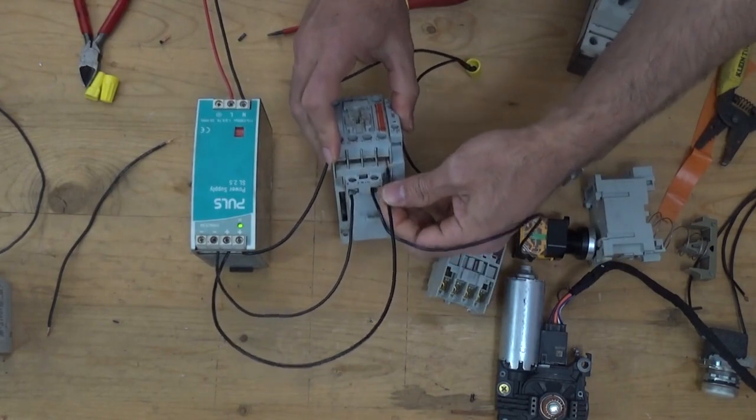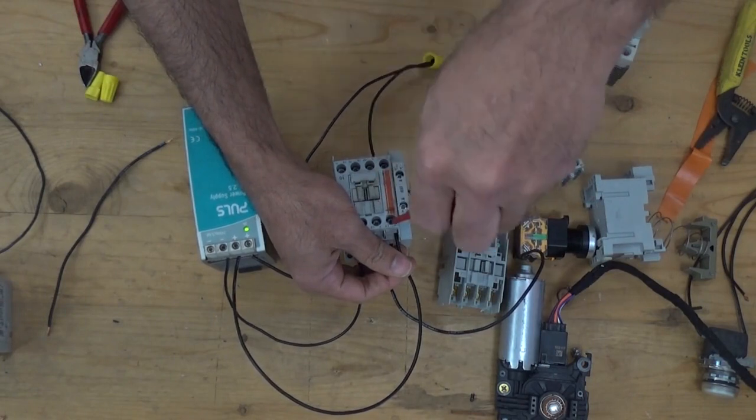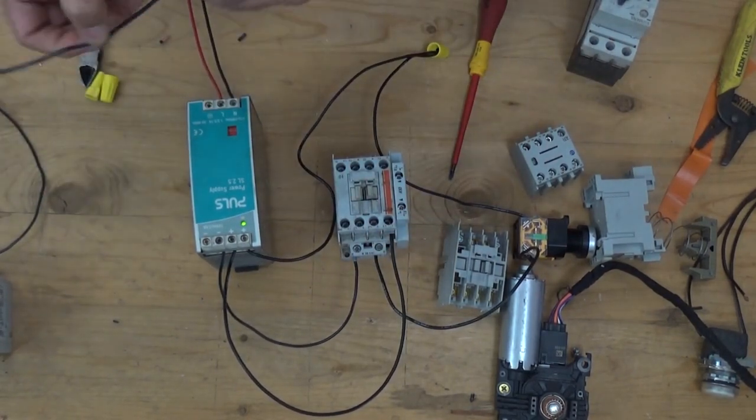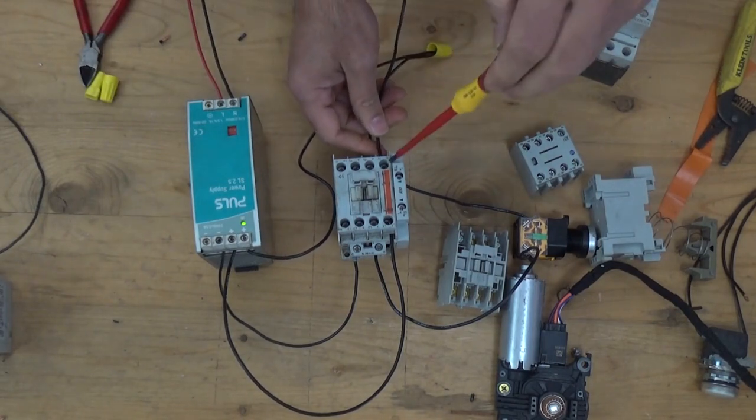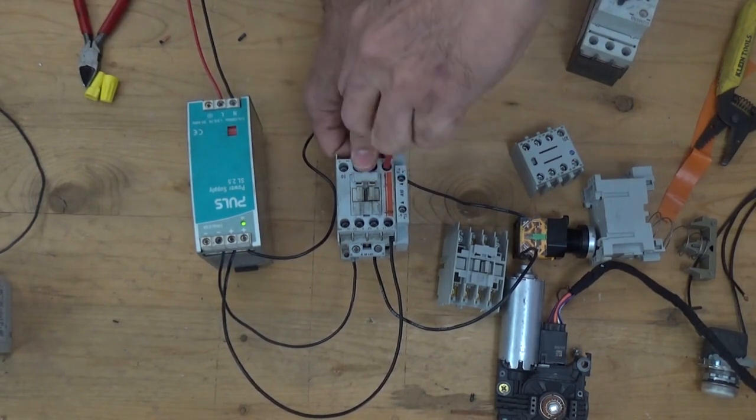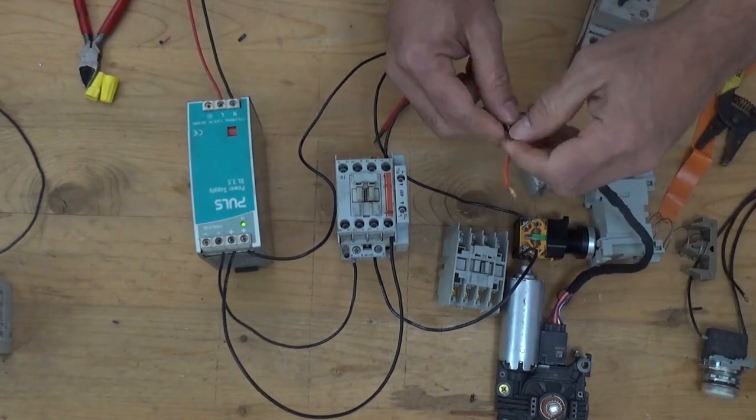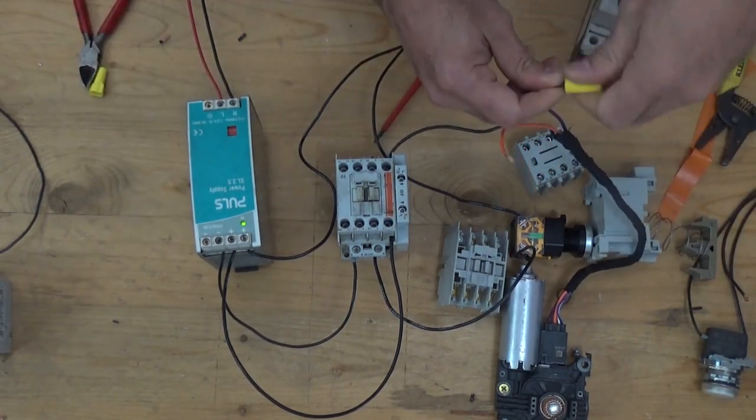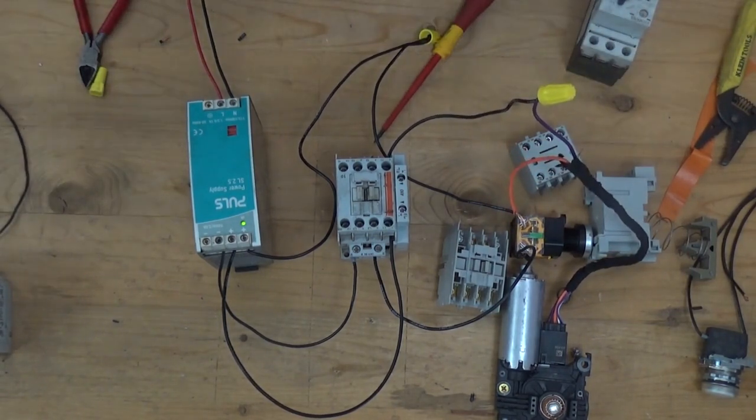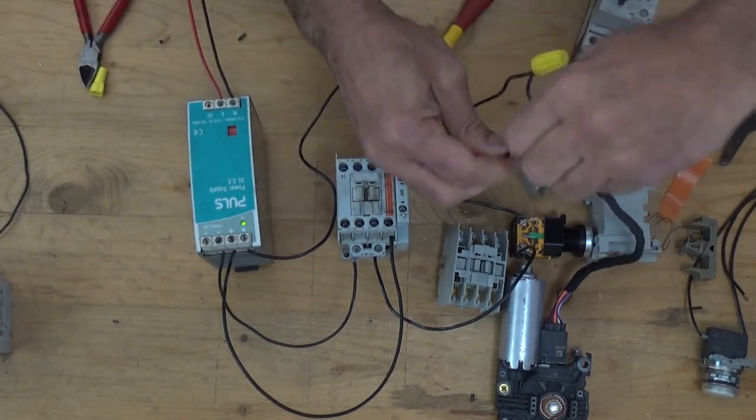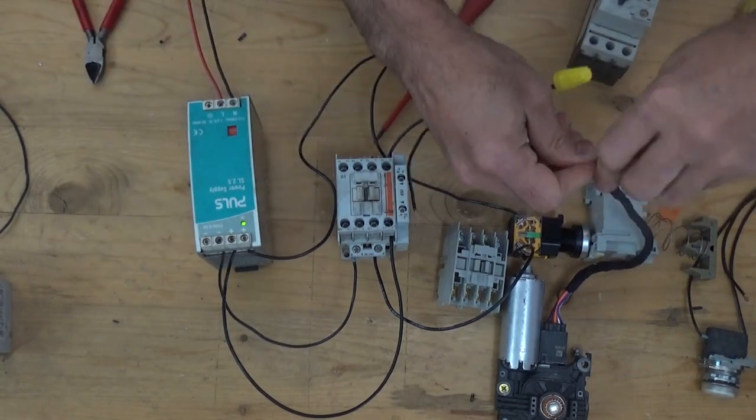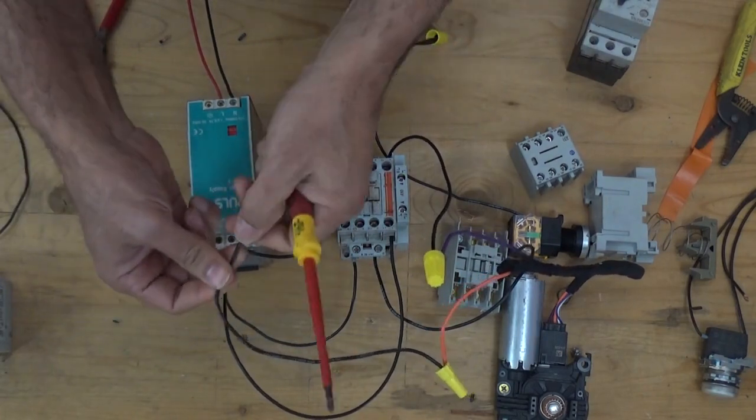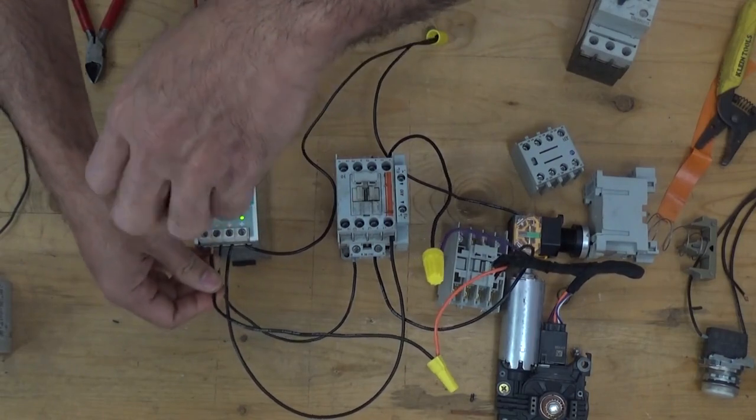After that, we're going to line one, T1, going to our motor. Then from our motor, the other side of the motor, we're going to put it to the negative supply of our power supply.